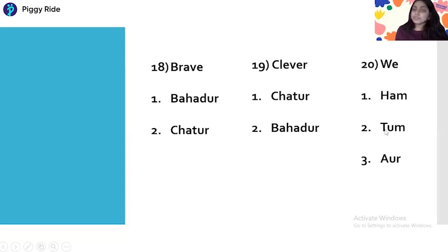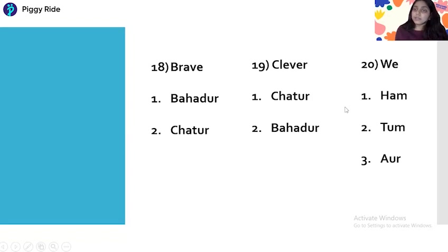For 'We,' the options are: number one Hum, number two Tum, number three Aur. We means Hum. Tum is the Hindi form of 'You.' Remember: You means Tum and Aap — Tum is used for younger people and Aap is used for older people. Aur means And. Brave means Bahadur, Clever means Chatur.